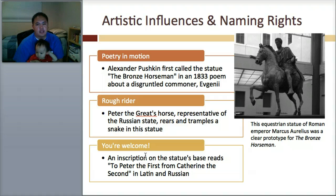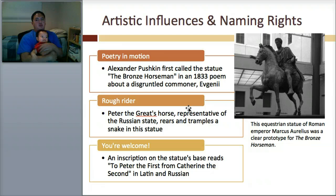The equestrian statue of Roman Emperor Marcus Aurelius was a clear prototype for the Bronze Horseman — they used it as a prototype for this Roman-inspired work.